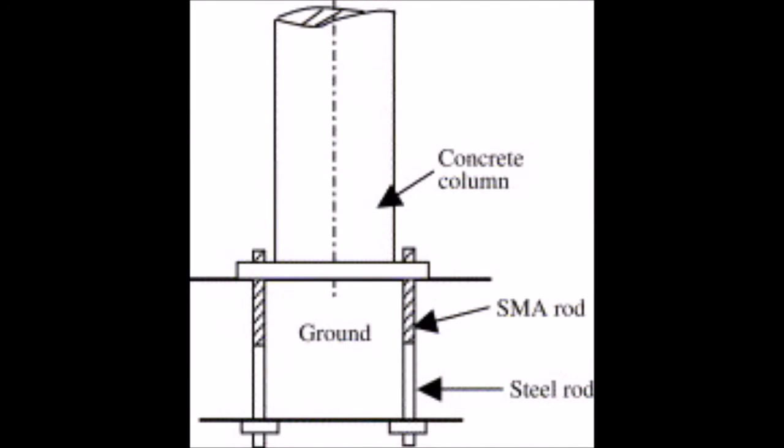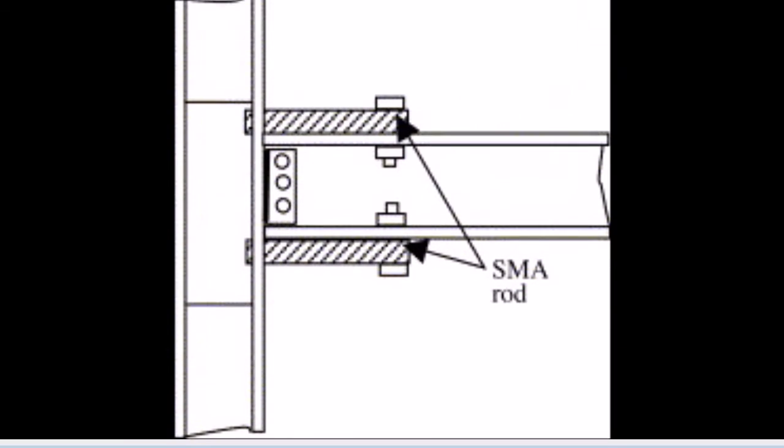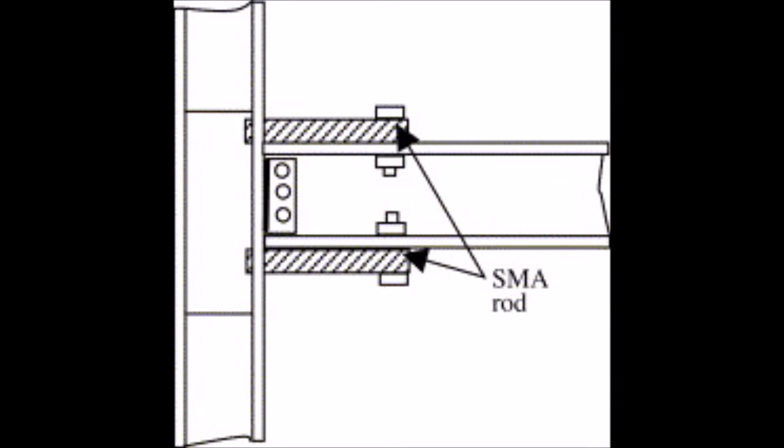In a ground isolation system as seen here, SMA-made isolators, which are installed between a superstructure and the ground to assemble an uncoupled system, filter the seismic energy transferred from the ground motion to the superstructure so that the damage of the superstructure is attenuated.